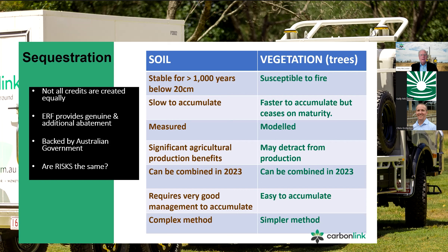Combining soils and vegetation methods — which was supposed to be out by now — has been delayed due to the Chubb Review. We're not expecting these to be combined until around September–October 2023. Soil carbon requires very good management to accumulate, whereas vegetation is easier. Soil is a very complex method, while vegetation is simpler, though both are complex.